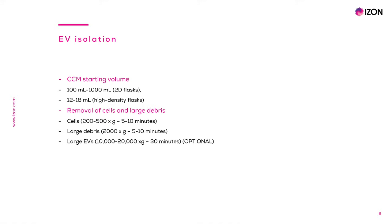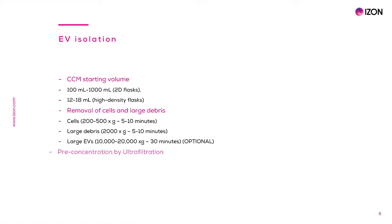There is an optional initial step here where large EVs or ecto/microvesicles can be pelleted with a spin at 10,000 to 20,000 G for 30 minutes and resuspended in the desired buffer volume. The supernatant from the last spin is transferred to another sterile tube and contains small EVs or nano EVs.